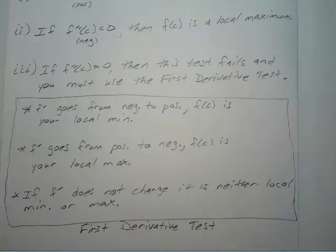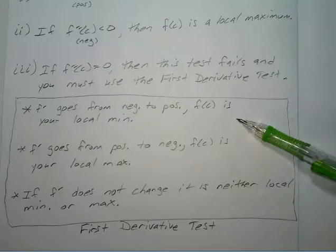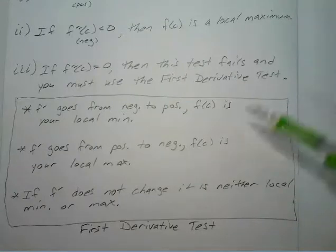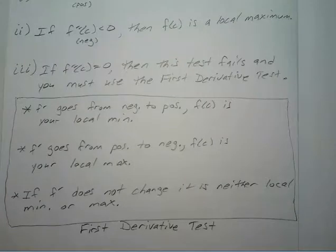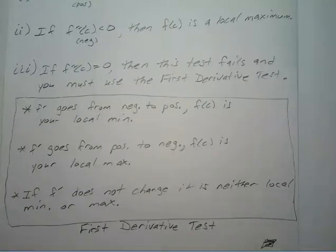The second derivative test is actually less work, so it's better to use it first. You use the first derivative test only if the second derivative test fails to find your local minimum and maximum. If you are still writing, feel free to press pause, but we are going to go ahead and jump to our first example.